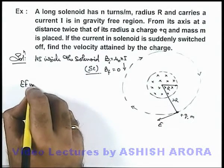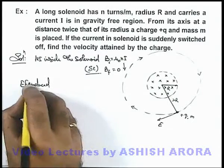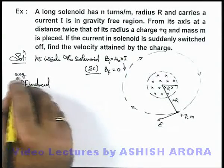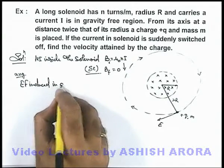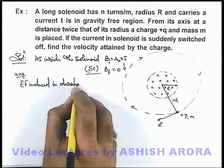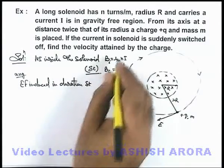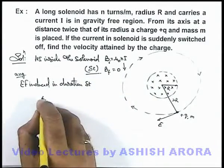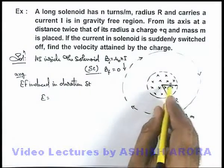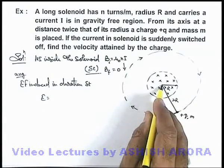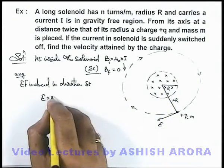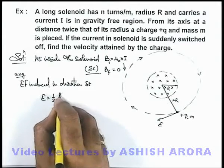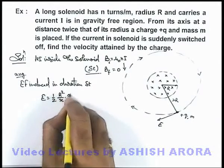Electric field induced, or average electric field induced in duration Δt, that is in which the field is switched off, can be written as: for a region outside the magnetic induction we can use electric field as half R² by x dB/dt.